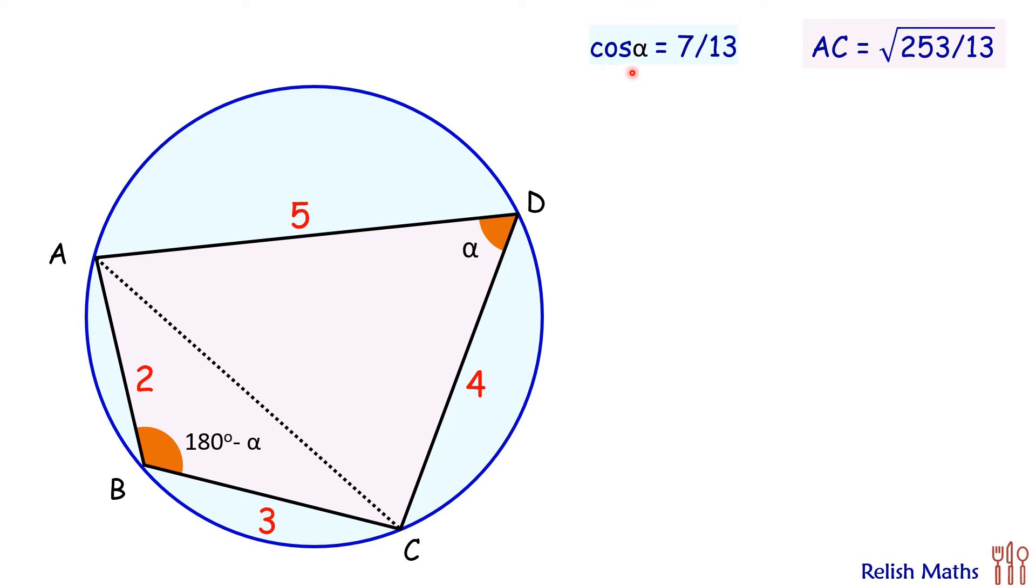Here, cos α is known and the length of diagonal AC is known. With the help of cos α, we can find the value of sin α using this formula. Putting the value of cos α as 7/13, we'll get sin α = 2√30/13.